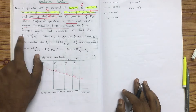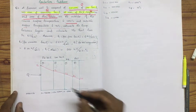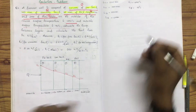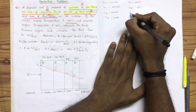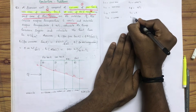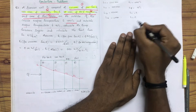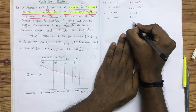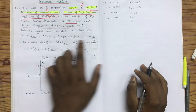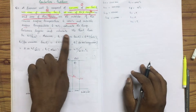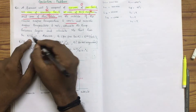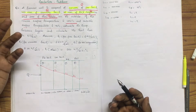Estimate the temperature between the layers: T2, T3, and T4. We have to find T2, T3, and T4, and the heat loss in kJ per hour.